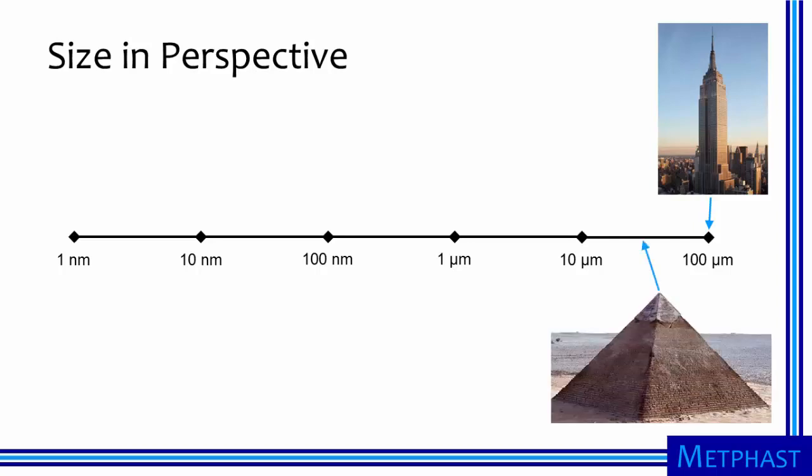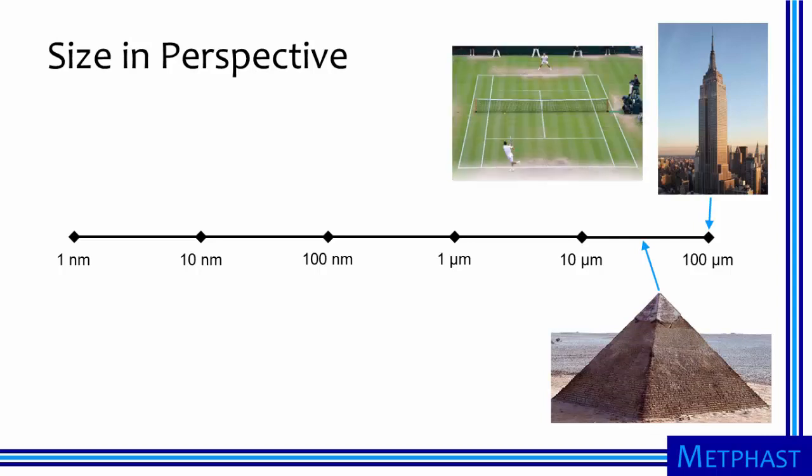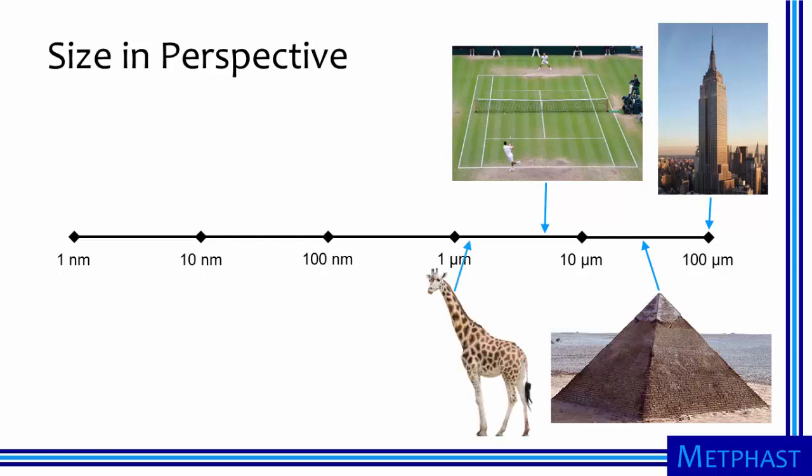If the Empire State Building is 100 micrometers tall, the Great Pyramid at Giza would be 31 micrometers tall. A tennis court, like center court at Wimbledon, would be 5.4 micrometers long. An adult male giraffe would be roughly 1.2 micrometers tall.